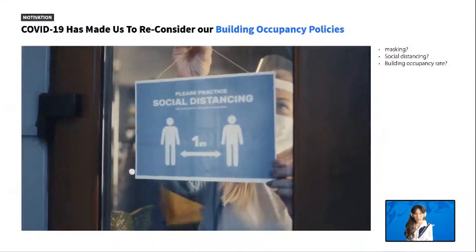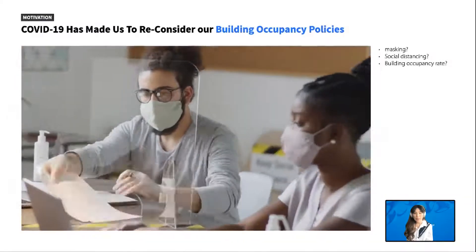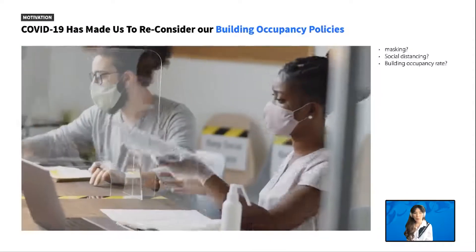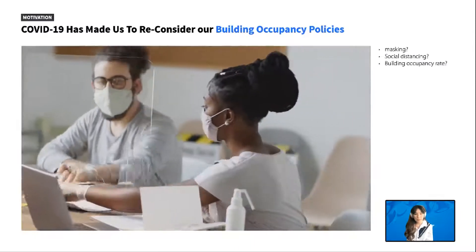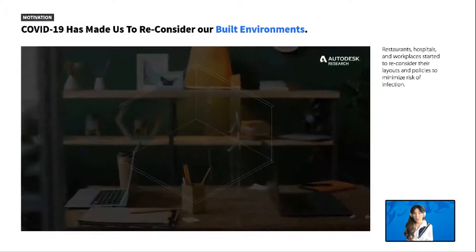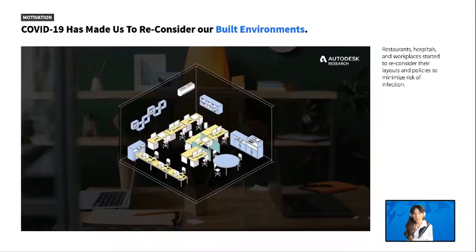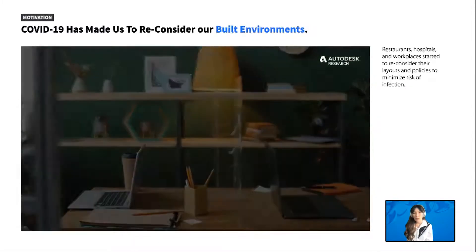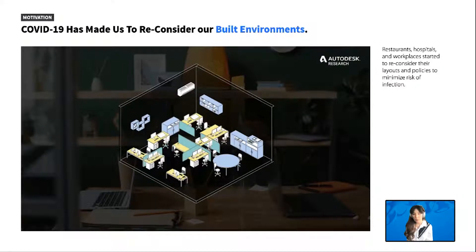It has been more than a year since the COVID-19 pandemic started. It has changed our lives dramatically and made us rethink about new policies for our communities, such as wearing a mask, social distancing, or occupancy rate. Also, it forces us to reconsider our built environments. Restaurants, hospitals, and workplaces are trying to reconfigure their layouts to minimize the risk of infection. We are trying to figure out which cases of furniture need to be activated or deactivated, and what would be the new optimal arrangements.